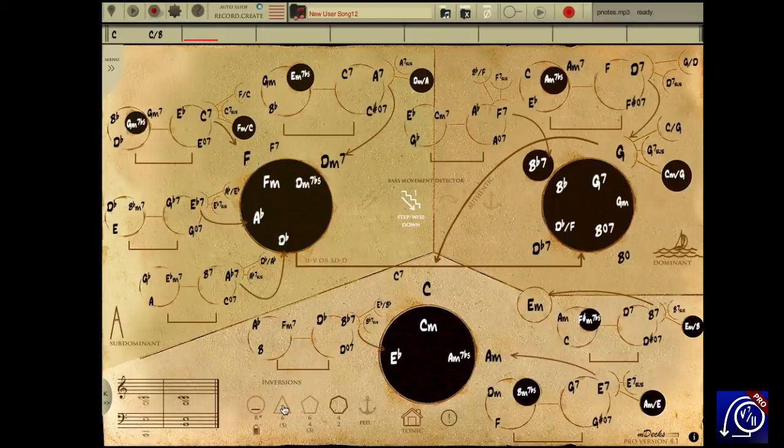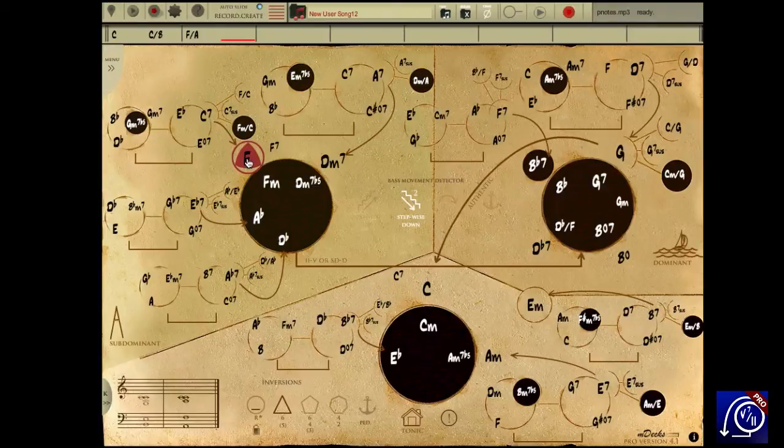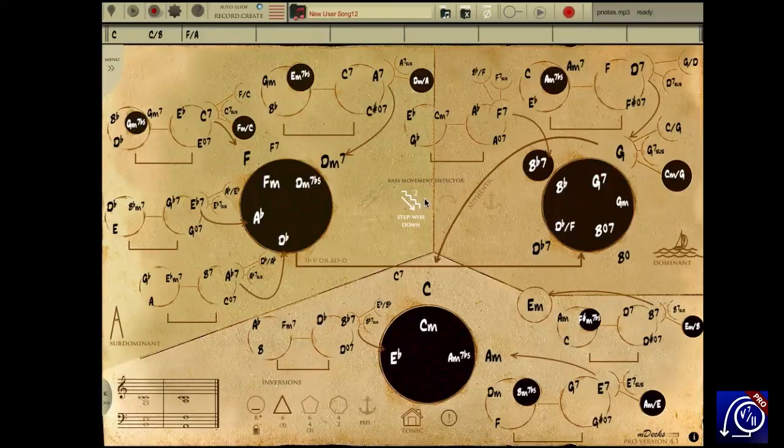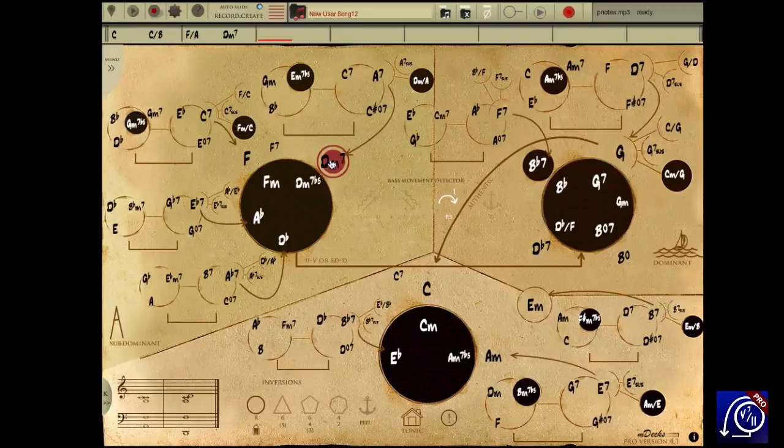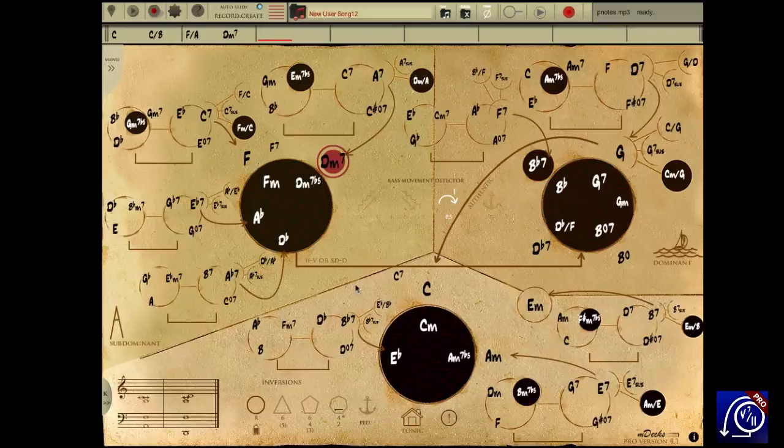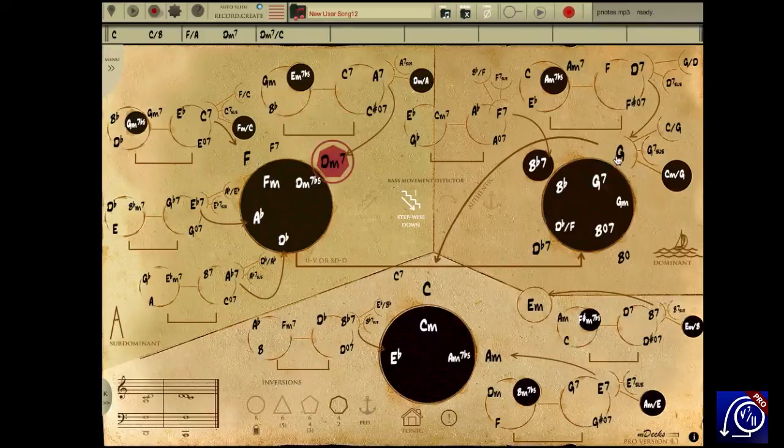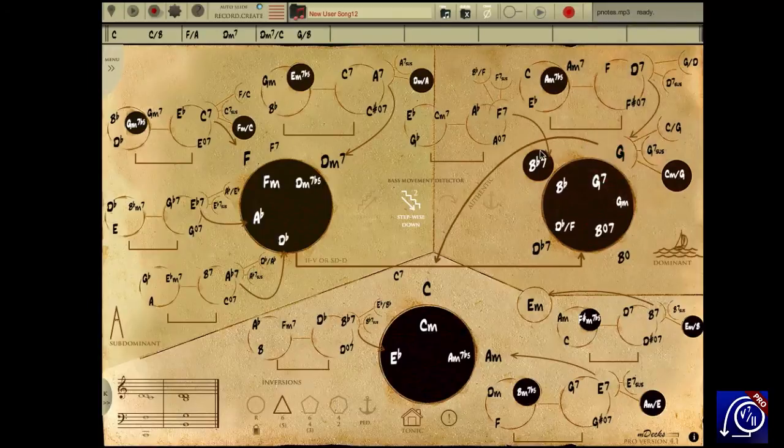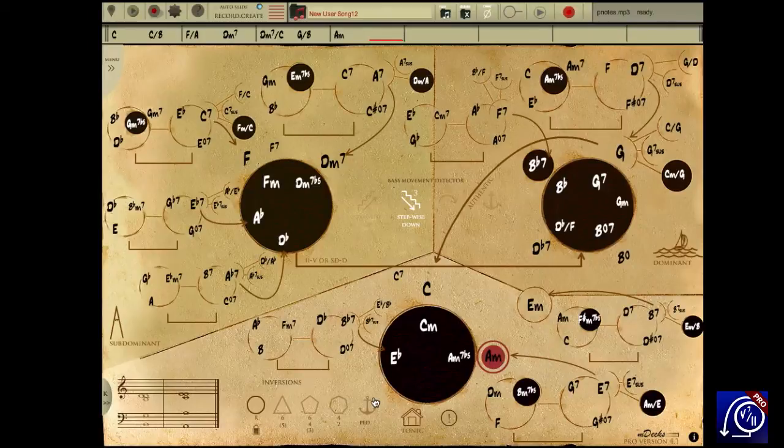Let's now add an F in first inversion. Bass will play an A. The bass detector has increased the counter of the stepwise down icon to a 2. Let's try adding a few more chords. D minor in root. D minor in third inversion. G in first inversion. Another nice bass line. Let's add a similar cadence, deceptively resolving this V chord with VI minor. A minor, third inversion.